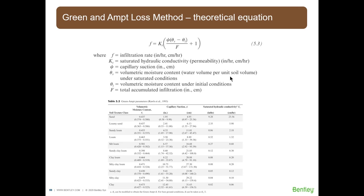If you're trying to calibrate your infiltration, you're probably better off with the Green-Ampt loss method. This is based on a theoretical application of Darcy's law, which relates the velocity of flow to the permeability of the soil. The infiltration rate is inversely proportional to the accumulated infiltration F. The benefit is that the infiltration rate can be calculated based on physical, measurable soil parameters as opposed to the more empirical coefficients of Horton.